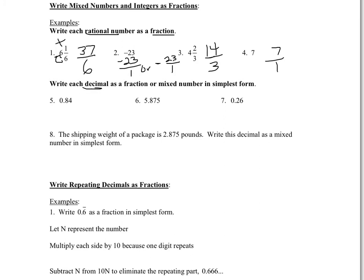To write a decimal as a fraction, you've got to remember your place value. 0.84 — this is 84 hundredths, because it ends in the hundredths place. So you always take that number, 84, and put it over 100 because it ends in the hundredths place. And then you should always simplify it — put it in simplest form. We can divide both by 4: 84 divided by 4 is 21, and 100 divided by 4 is 25. There's no other factor you could divide both by, so you are in simplest form.